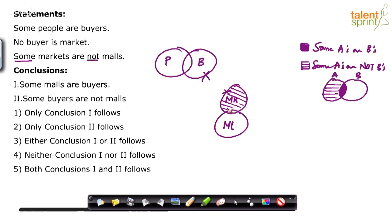Don't get confused — 'some markets are not malls' does not mean that some markets are malls. You need to go back and refer to the syllogisms video for the basic concepts. For 'some A are not B', there is no definite conclusion. If you think 'some markets are not malls' means 'some markets are malls', you are wrong.